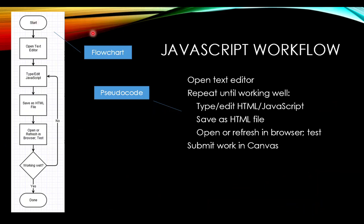So this is a flowchart. Flowcharts have very specific symbol shapes to mean certain things. There's a terminator start-and-stop symbol at the beginning and end. There are rectangular boxes, and those rectangles represent processes — things that you do, or steps. In general, you flow from top to bottom, doing this step and then that step. You get a different shape for questions or decisions — down here you see this diamond, and that represents a choice. In this case it's asking: is it working well? There's an arrow coming out with the no answer and another with the yes answer, and you follow the appropriate arrow based on the choice.